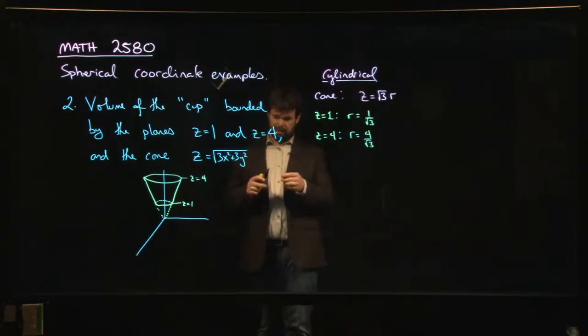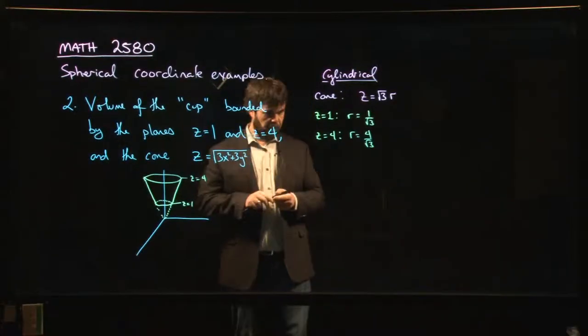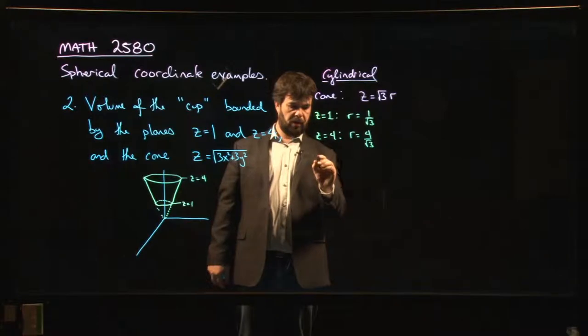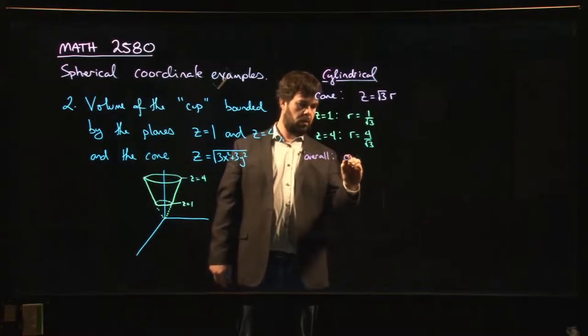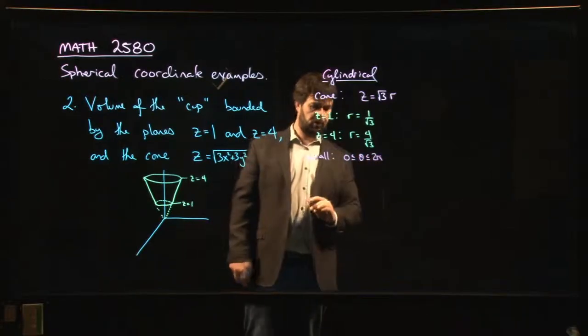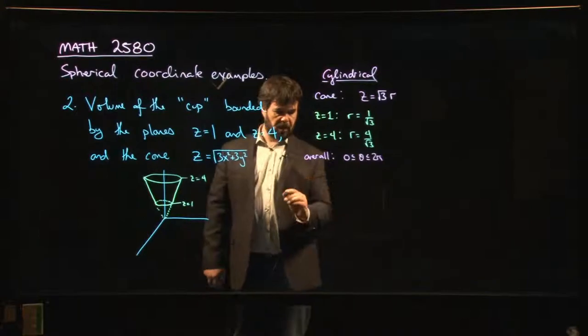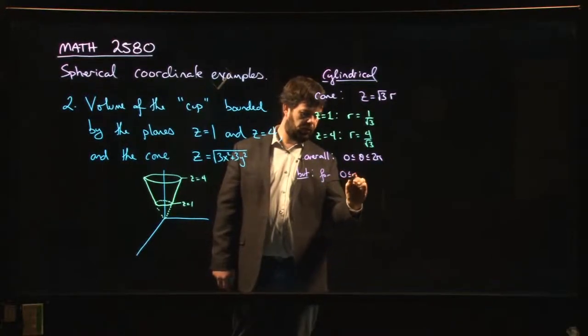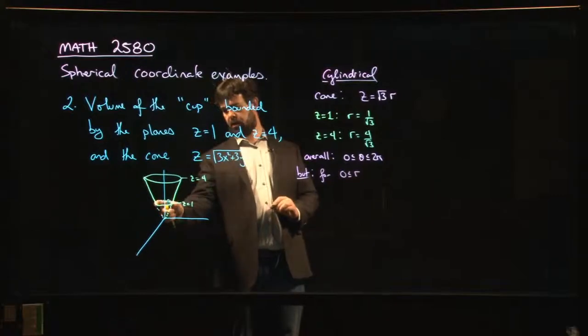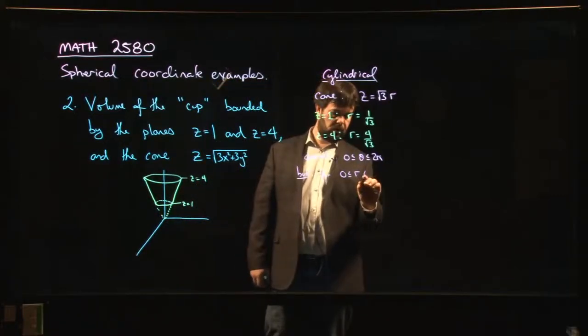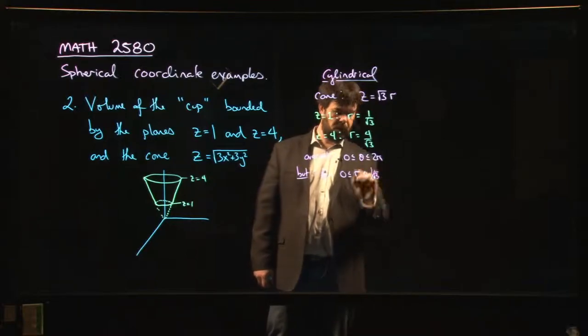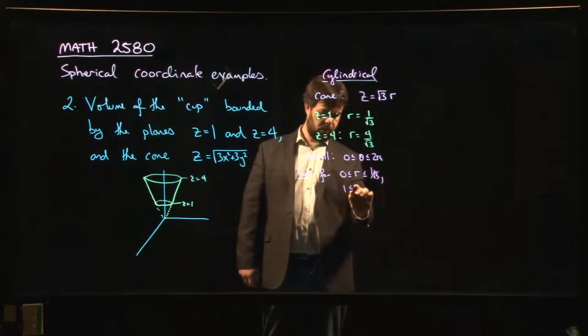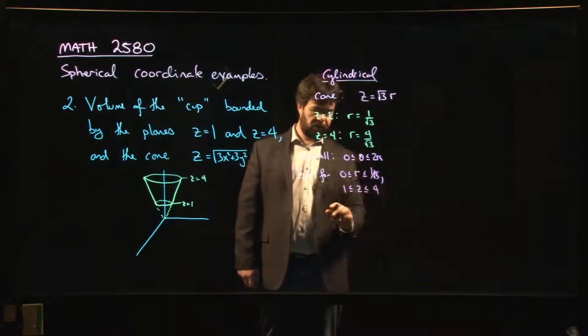But you can maybe see what the issue is here. The issue is that we're certainly going all the way around, so no matter what, we know that theta is going to go from zero to two pi, right? But then we have this issue. When r is between zero and, well, once we hit this bottom circle, right? One over root three, we have that z goes between one and four.